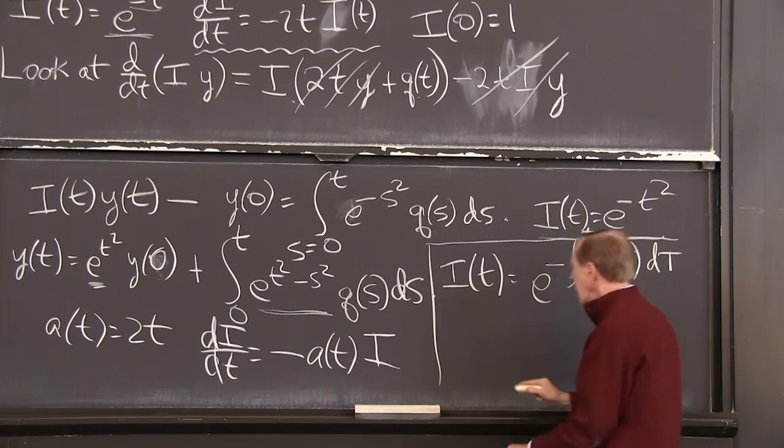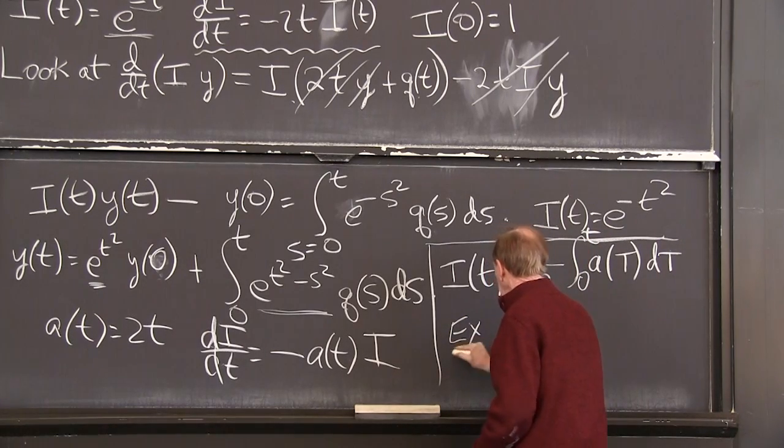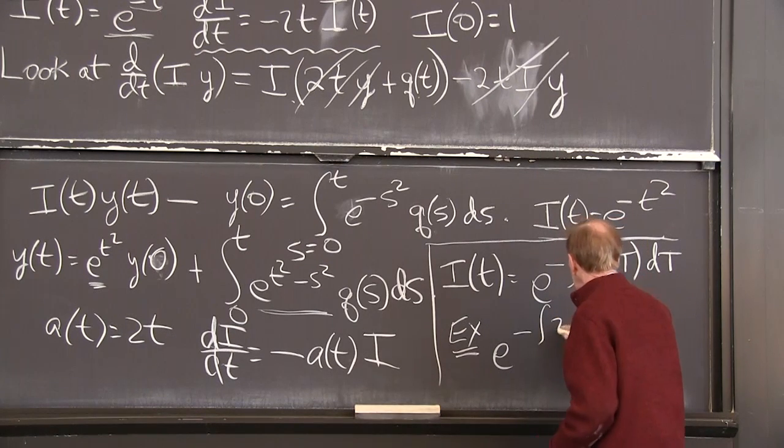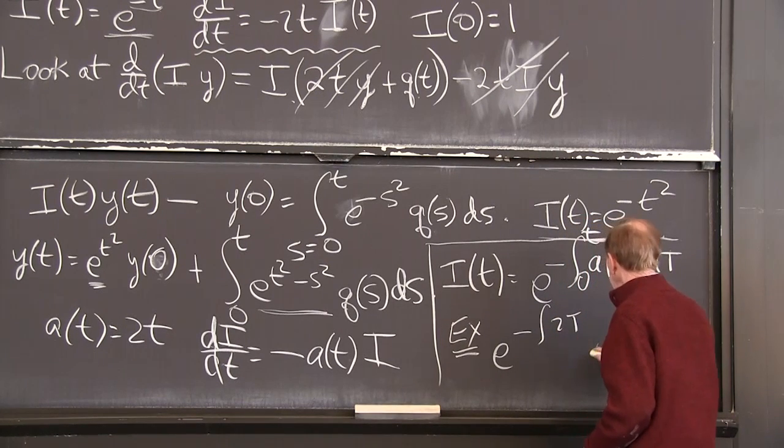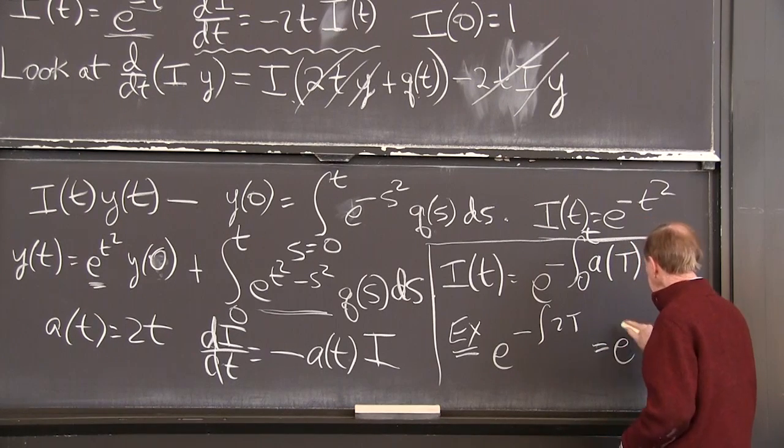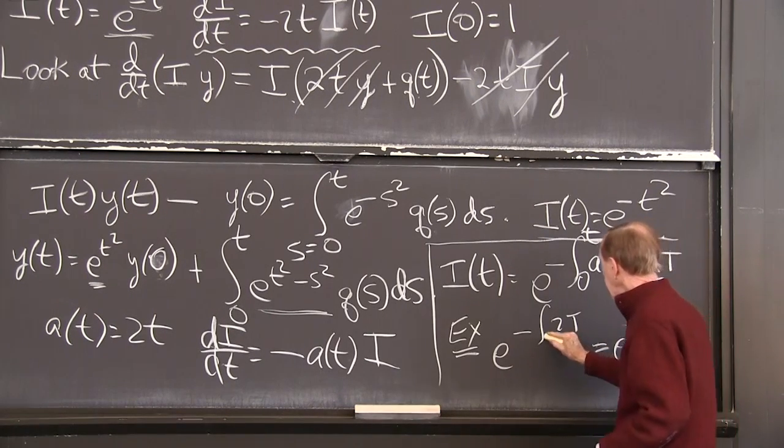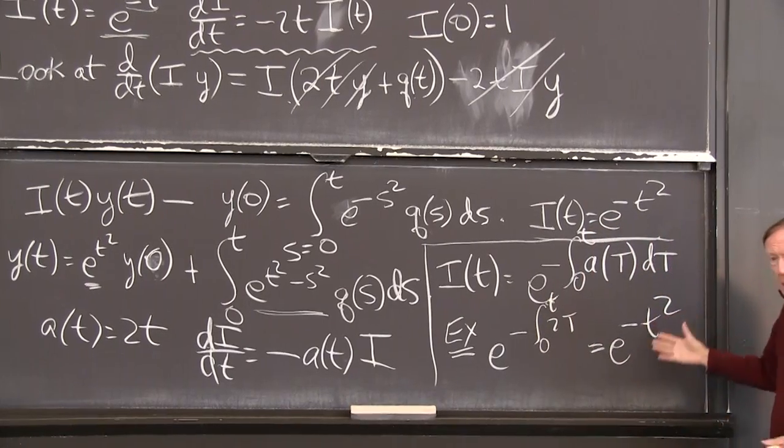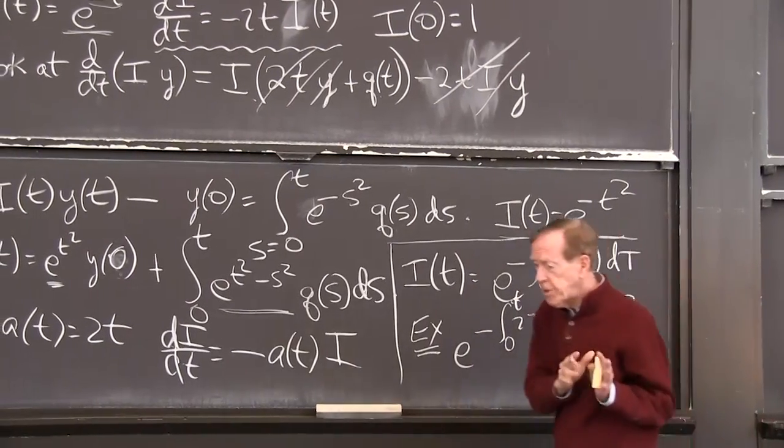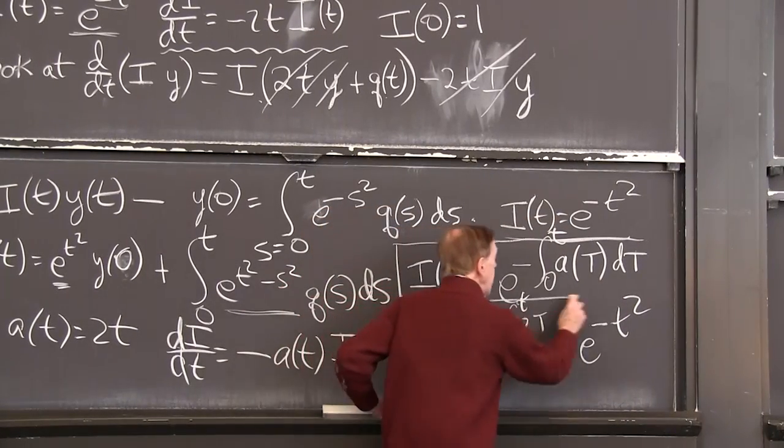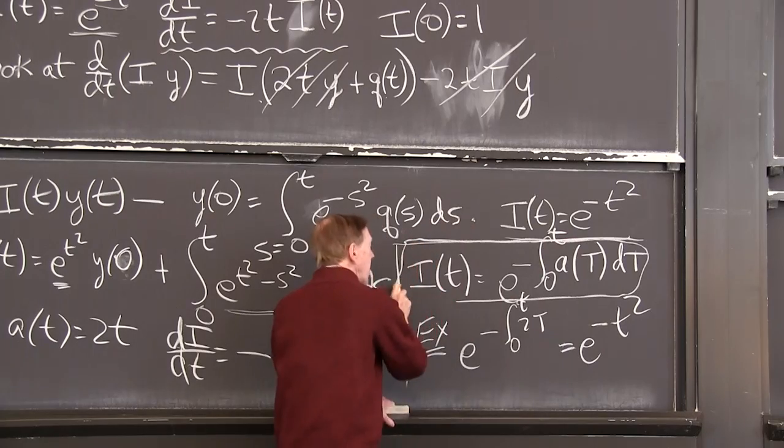Now let me just do again this example just to see. I have e to the minus the integral of 2t, which is e to the minus t squared. That's how I get t squared as the right choice for our example. And the general rule is that's the integrating factor.